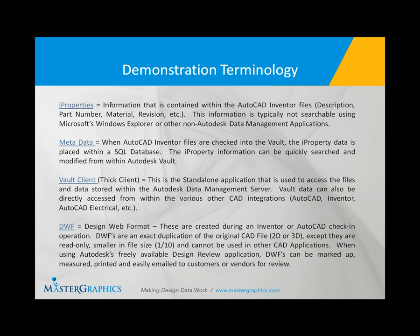Before the demonstration, I wanted to talk about some terminology you'll hear throughout. The first is I-properties. For those of you using Inventor, I-properties is the data contained within the files — your assemblies, your parts, your drawings. That could be a description, a part number, material, or revision. That information is indexed into Autodesk Vault and becomes searchable, and this is all an automatic process.